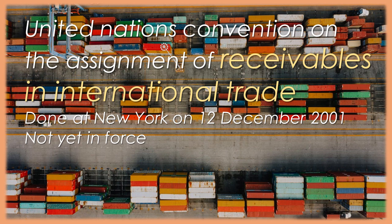Article 39. Declaration on application of Chapter 5. A state may declare at any time that it will not be bound by Chapter 5. Article 40. Limitations relating to governments and other public entities. A state may declare at any time that it will not be bound, or the extent to which it will not be bound, by Articles 9 and 10 if the debtor or any person granting a personal or property right securing payment of the assigned receivable is located in that state at the time of conclusion of the original contract and is a government, central or local, any subdivision thereof, or an entity constituted for a public purpose. If a state has made such a declaration, Articles 9 and 10 do not affect the rights and obligations of that debtor or person. A state may list in a declaration the types of entity that are not the subject of a declaration.